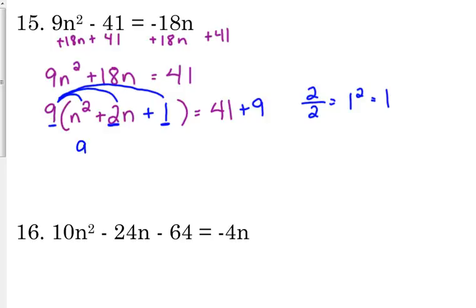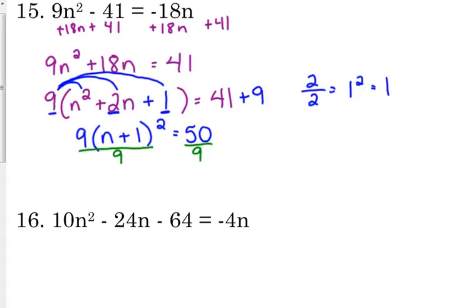Now we can go about with our process. 9 times n plus 1 squared is equal to 50, 41 plus 9. One more thing that we have to add to our process. Before we can take the square root, that left side can't have that 9 in front of it. So it's being multiplied by 9, so we need to divide both sides by 9 so that that goes away.